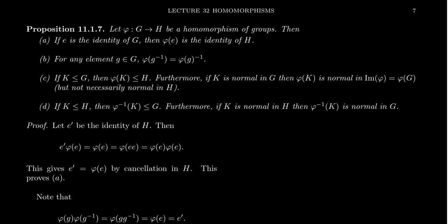The first principle we're going to prove is that if E is the identity of the group G, then phi of E will actually be the identity of the group H. So homomorphisms always preserve the identity. Every isomorphism is also a homomorphism — isomorphisms are just bijective homomorphisms — so this also tells us that an isomorphism will send an identity to an identity. Homomorphisms will also send inverses to inverses: phi of G inverse is equal to phi of G, then raised to the inverse.